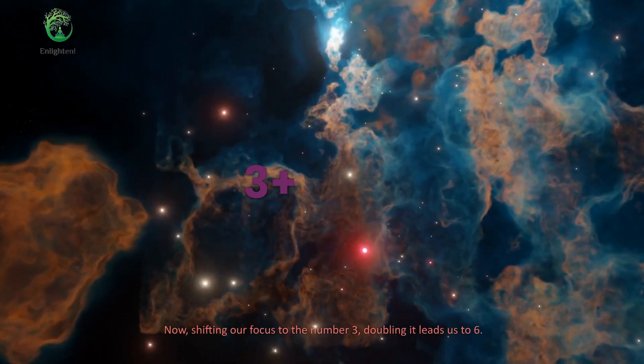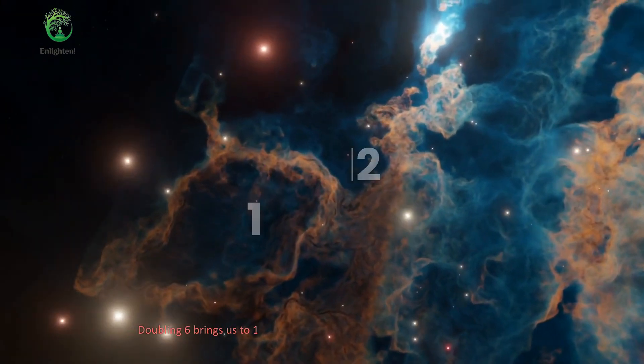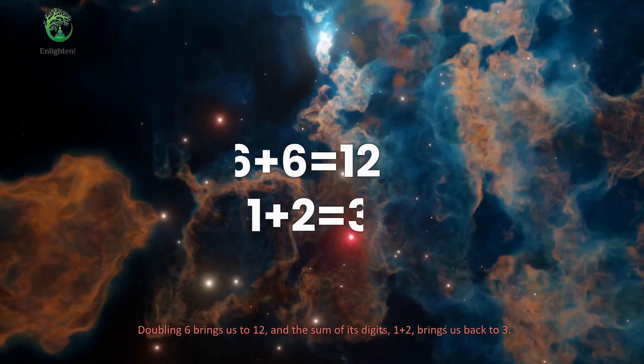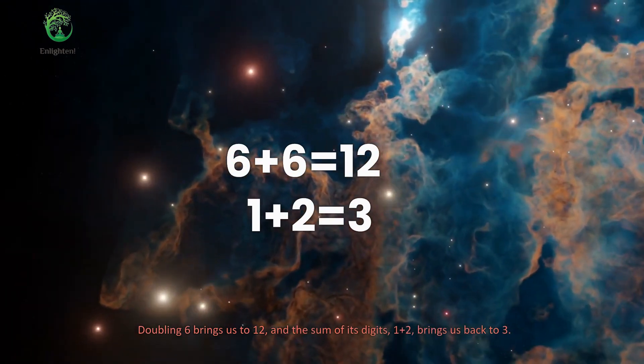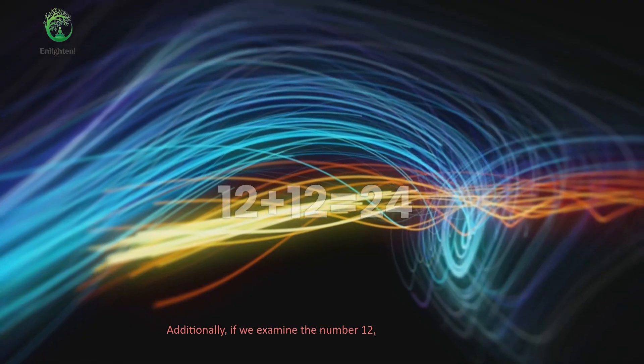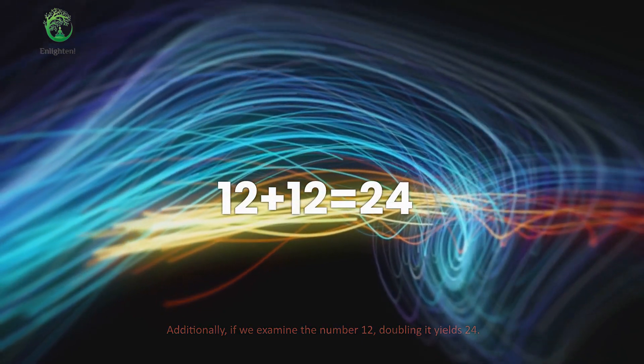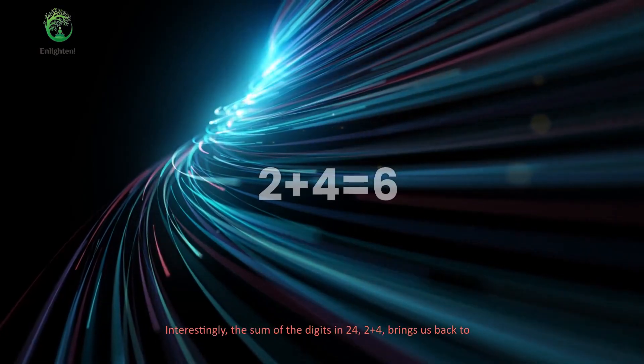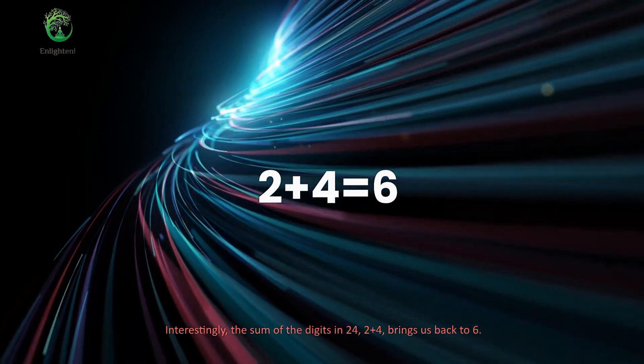Now, shifting our focus to the number 3, doubling it leads us to 6. Doubling 6 brings us to 12, and the sum of its digits, 1 plus 2, brings us back to 3. Additionally, if we examine the number 12, doubling it yields 24. Interestingly, the sum of the digits in 24, 2 plus 4, brings us back to 6.